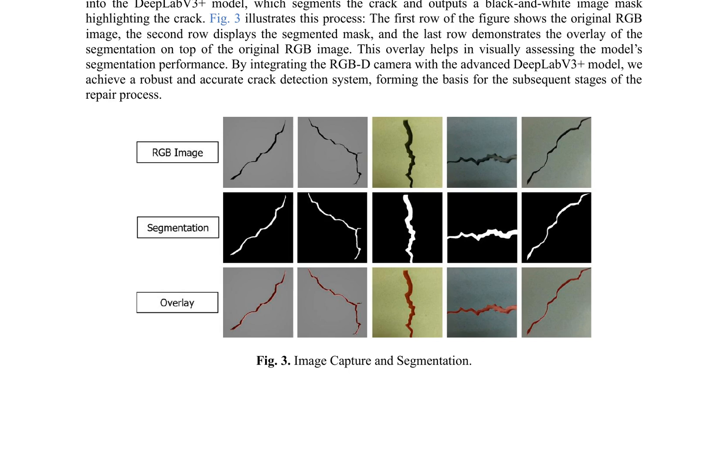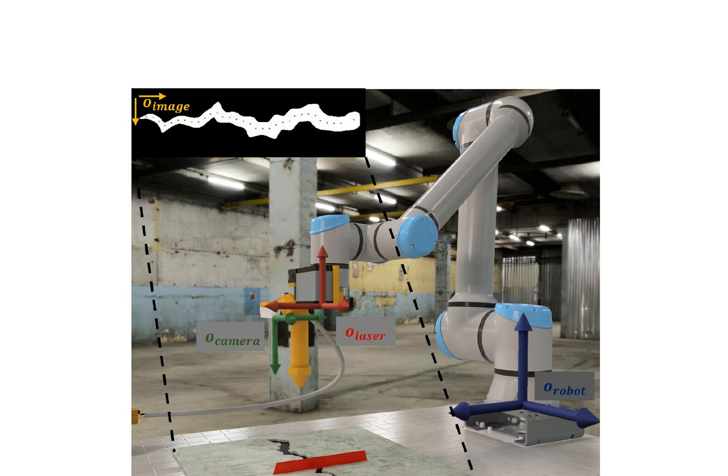The crack detection process involves feeding the captured RGB image into a pre-trained DeepLab V3 Plus model, which segments the crack and outputs a black and white image mask. The segmented mask is then converted to grayscale, followed by binary thresholding and skeletonization to extract the pixel coordinates of the crack.